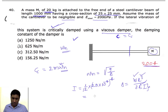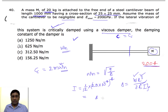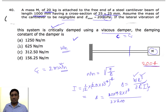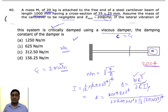Substituting into the delta formula: delta = (20 × 9.8 × 1³) / (3 × 200 × 10⁹ × (1/12) × (25 × 10⁻³)⁴). Note that E is given in gigapascals, where giga is 10⁹, and pascal is N/m². The exponent for length is 3, not 4.